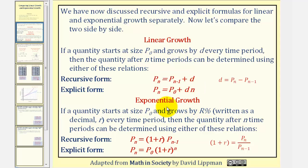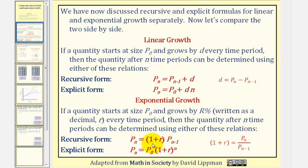For exponential growth, if a quantity starts at size p sub zero and grows by r percent every time period, then the quantity after n time periods can be determined using either of these two equations. We have a recursive equation and an explicit equation. For exponential growth, the recursive equation is p sub n equals the quantity one plus r times p sub n minus one. We can find the quantity one plus r, the growth multiplier, using this formula here.